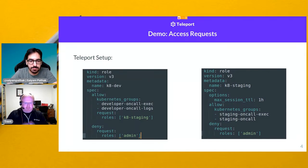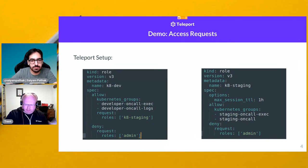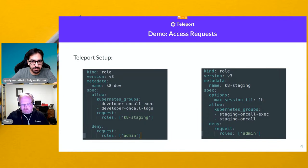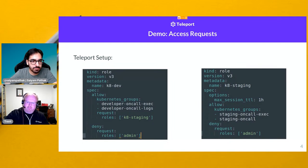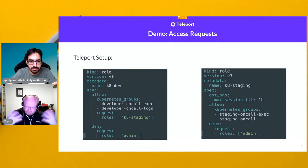This is a very simple example of what the Teleport RBAC system looks like. Once you start dealing with templates, interpolation, and pulling values from your SSO provider to inject into roles, you get to the much more complex and smarter end. But for this demonstration, we're at the simple end of the scale.